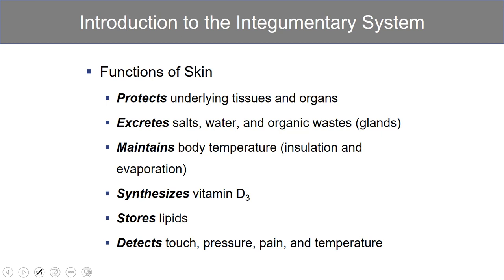In addition to protection, the skin excretes salt, water, and even some organic waste products. We use the skin in maintaining body temperature — the skin insulates, but you can also lose heat through evaporation. Our skin is used to synthesize vitamin D, the sunshine vitamin. We store lipids in the skin, especially down in the hypodermis. And then it is our first opportunity to detect touch and pressure, as well as pain and temperature — our first contact with the environment.